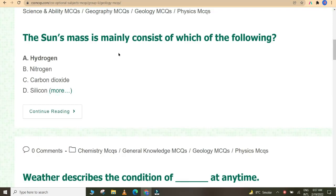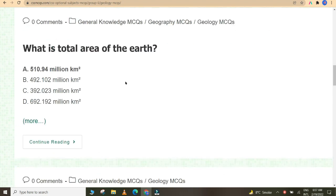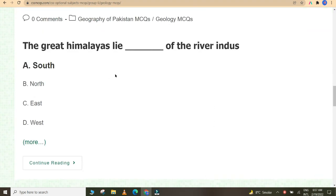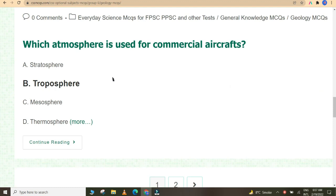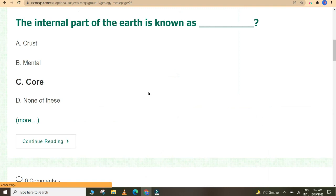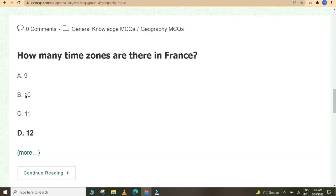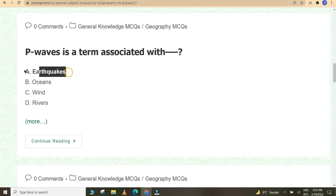The sun's mass is mainly consists of hydrogen. What is the total area of earth? 510.94 million kilometers square. Total area of the earth is 509,600,000 square kilometers. The Great Himalayas lie south of the river Indus. Which atmosphere is used for commercial aircraft? Troposphere. The internal part of the earth is known as core. Sphinx is located in Egypt. How many time zones are there in France? 12. P waves is a term associated with earthquakes. Which country has the most number of active volcanoes in the world? Indonesia.